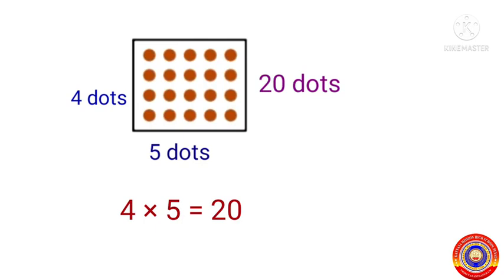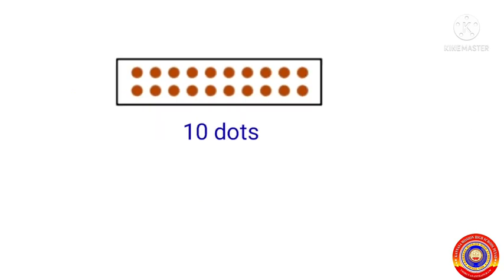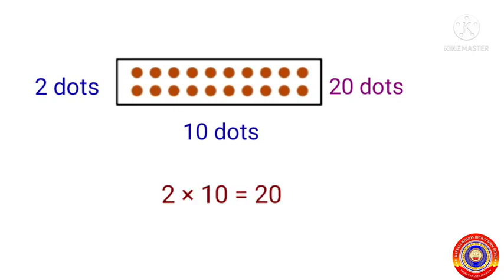Can you make another rectangle by rearranging these 20 dots? Yes — by arranging the number of dots widthwise equal to 10 and the number of dots heightwise equal to 2, the total number of dots is equal to 2 into 10, that is equal to 20.